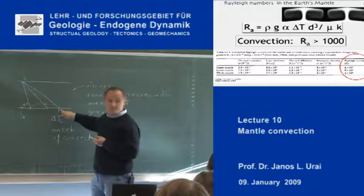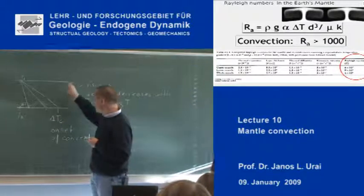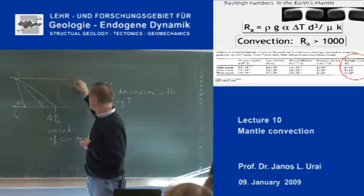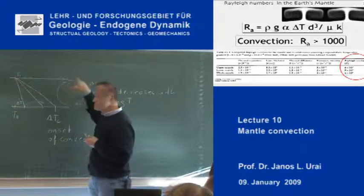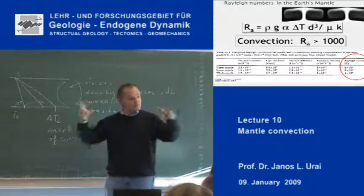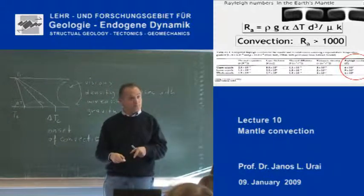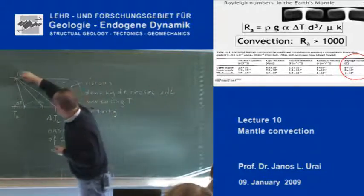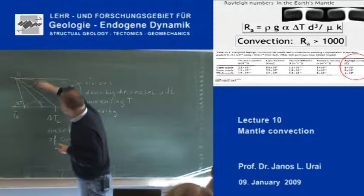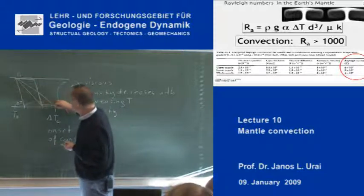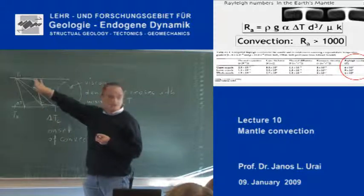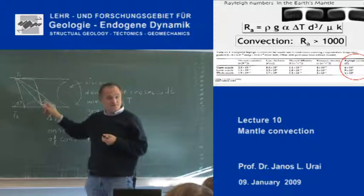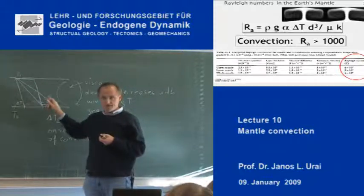And if this happens, then hot material will go up, cold material will go down, and you set up convection cells — the material will start to move. And because of that, the temperature gradient will be different. There are going to be two thermal boundary layers, and in the middle of the layer, the temperature gradient is not as high.